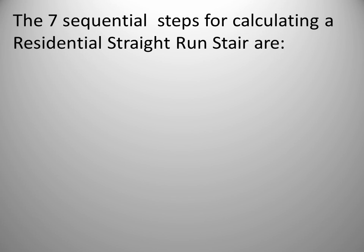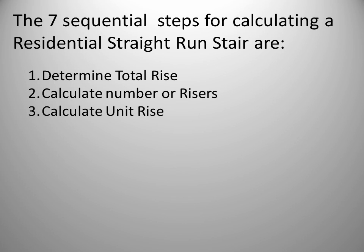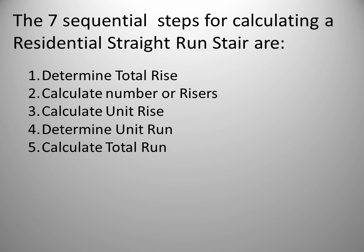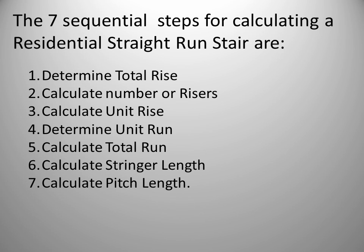The seven sequential steps for calculating a residential straight run stair are: Step one, determine the total rise. Step two, calculate the quantity or number of risers. Step three, calculate the unit rise, or the height of each step. Step four, determine the unit run. Step five, calculate the total run. Step six, calculate the stringer length. And step seven, calculate the pitch length.